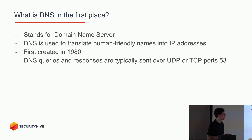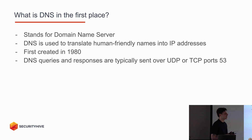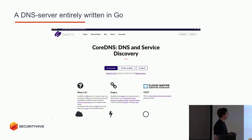DNS stands for Domain Name Server, and on a high level it is used to translate human-friendly names — domain names — to IP addresses, so we as humans do not have to enter Google's IP address in our browser but can just go to google.com. It was first created in the 1980s and has had a lot of updates since then. In the most basic form you can send queries using UDP or TCP over port 53. Since then there have also been updates like DNS over HTTPS, DNS over TLS, and DNS over gRPC.